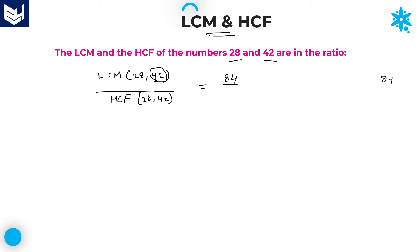Next, to calculate HCF, take the lowest number and its highest factor. Highest factor is 28. 28 is not a factor of 42. The next factor of 28 is 14. 14 is a factor of 42. Therefore, HCF of those two numbers is 14.